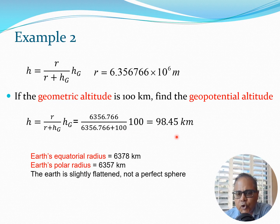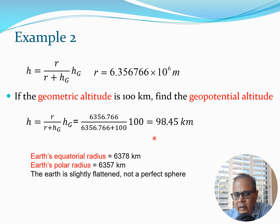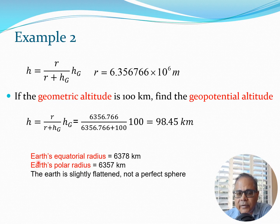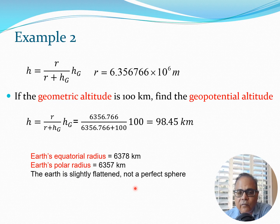Using the given radius and a geometric altitude of 100 kilometers, we substitute into the equation and get a geopotential altitude of approximately 98.45 kilometers — slightly different from hg. Going further up, h and hg diverge progressively. Also worth noting is that the Earth's radius at the equator is slightly greater than at the poles, making the Earth a slightly flattened sphere rather than a perfect sphere — something to keep in mind.